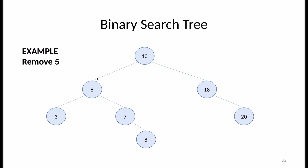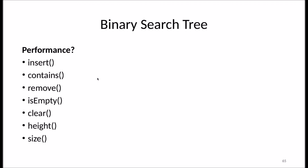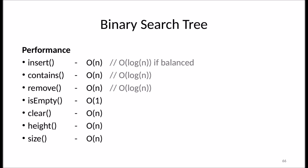Those are the three cases for removing a node from a binary search tree. Regarding performance: insert, search (contains), and remove are all O(n) in the worst case, because a binary search tree can always degrade into a linked list. If we can guarantee the tree is balanced, performance improves to O(log n). For regular binary search trees there's no such guarantee, but AVL trees and red-black trees maintain balance, which I cover in a separate video.